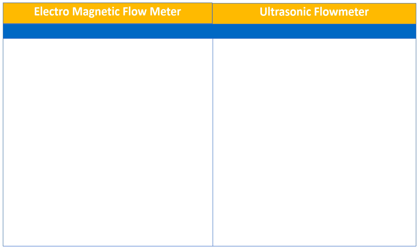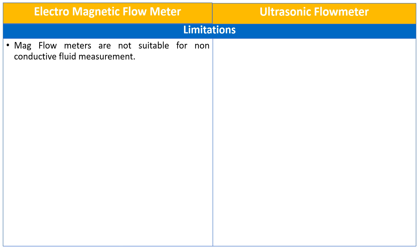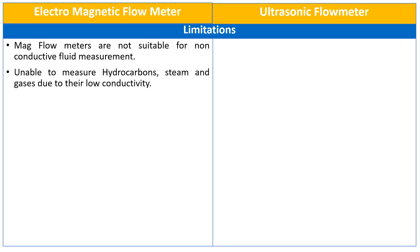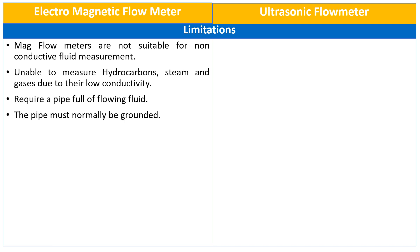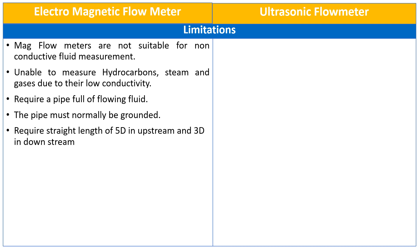Both the electromagnetic and ultrasonic flow meters have some limitations. The electromagnetic flow meters are not suitable for non-conductive fluid measurement. They are unable to measure hydrocarbons, steam, and gases due to their low conductivity. They require a pipe full of flowing fluid. The pipe must be normally grounded in case of an electromagnetic flow meter. The electromagnetic flow meter requires a straight length of 5D in upstream and 3D in downstream.